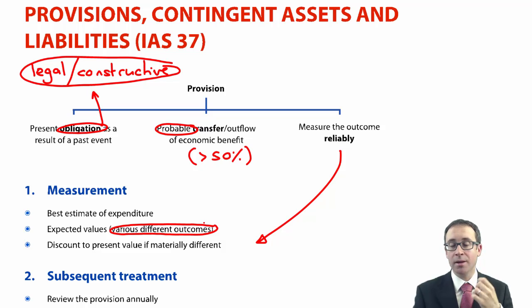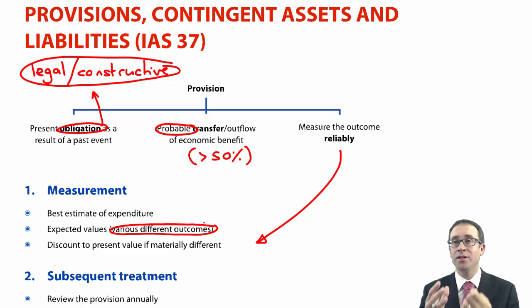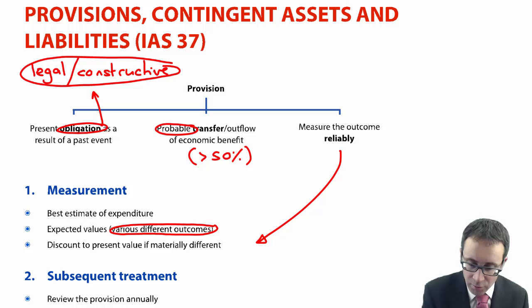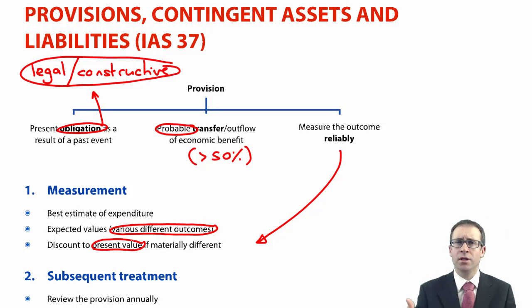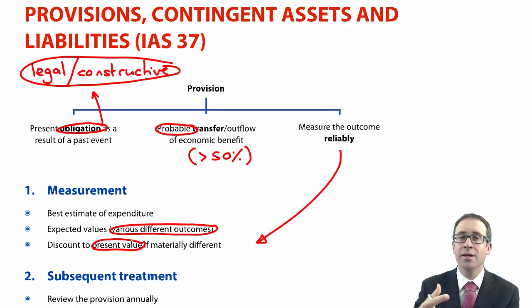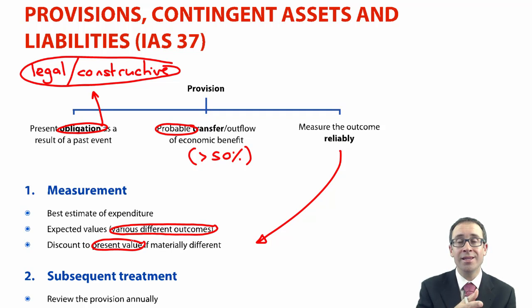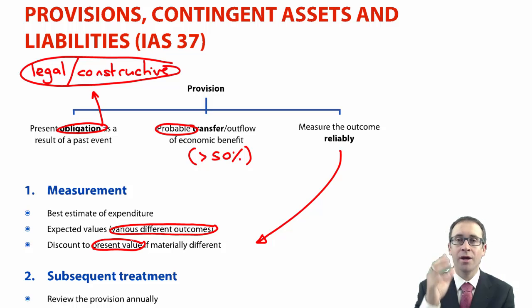The other situation in terms of measurement involves measurement criteria — historic costs, current costs, realisable value, present value. If the amount that you are going to pay in the future is materially different, coming back to things being relevant if they are material, and materially different to what you'll settle in the future, you discount it back to present value. Your common scenario there will be decommissioning costs of an item of property, plant and equipment that will be decommissioned, say, in 10, 15 or 20 years.